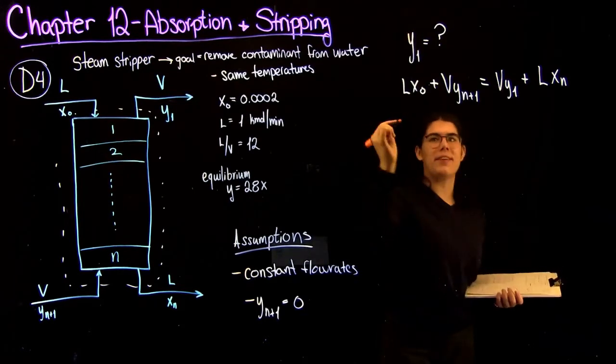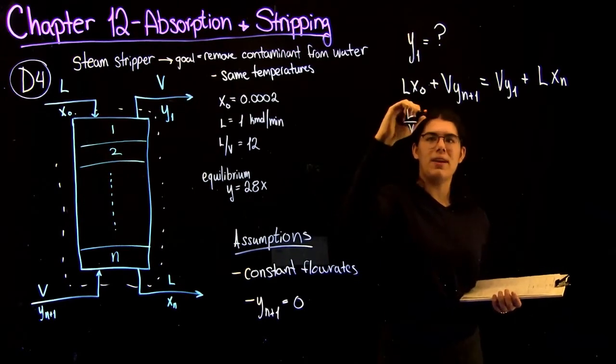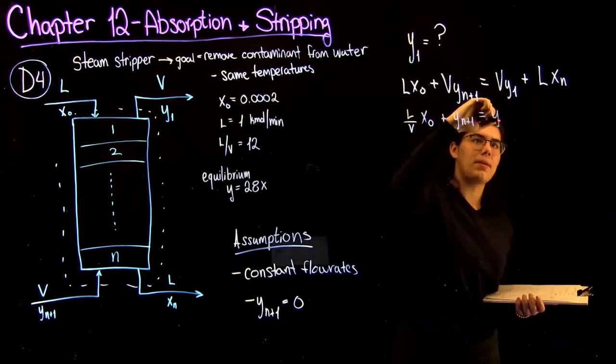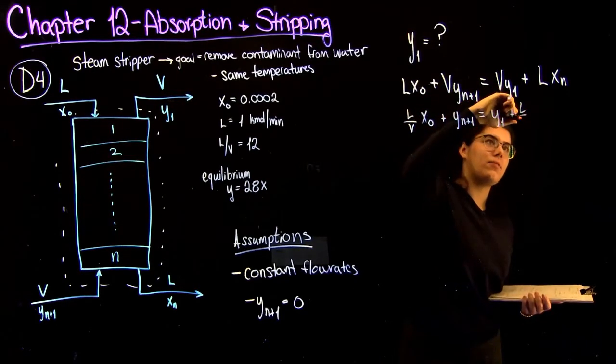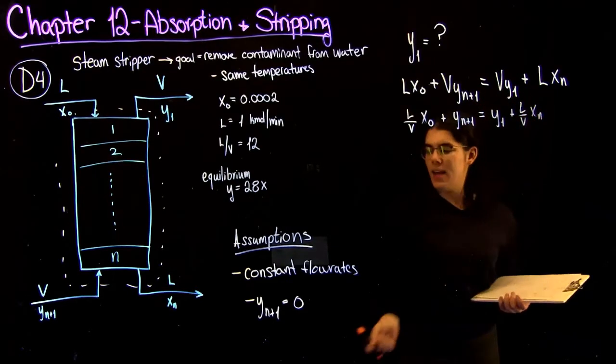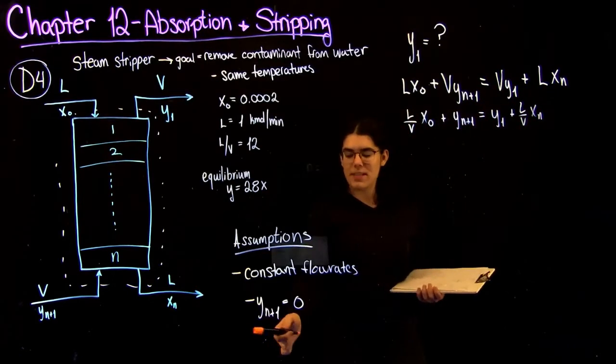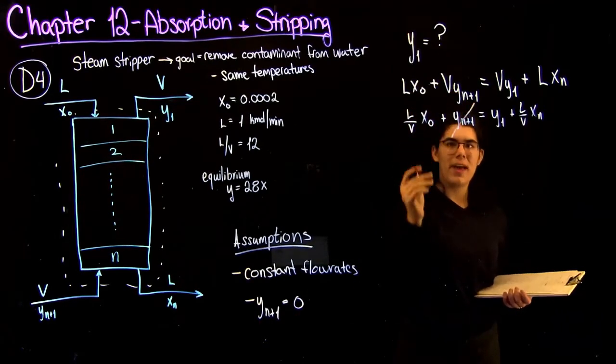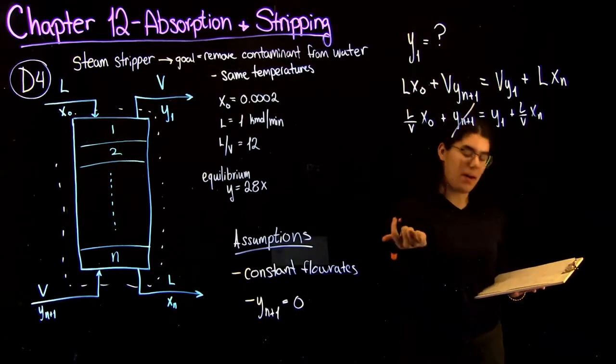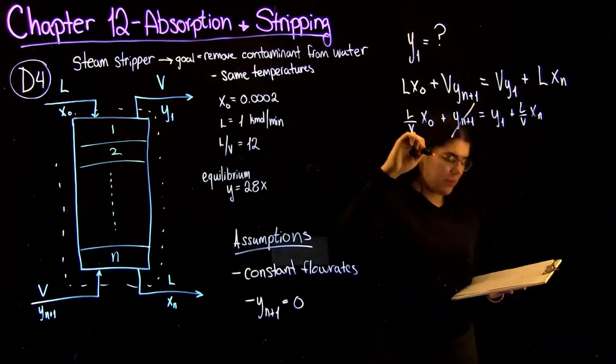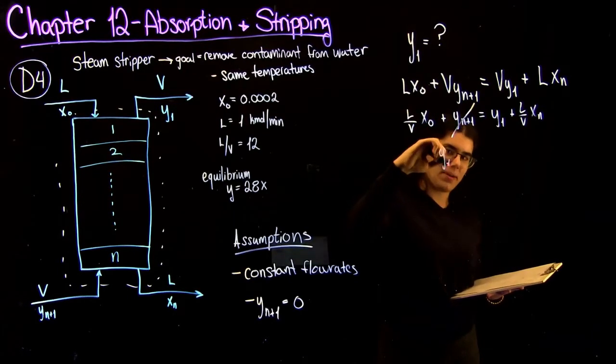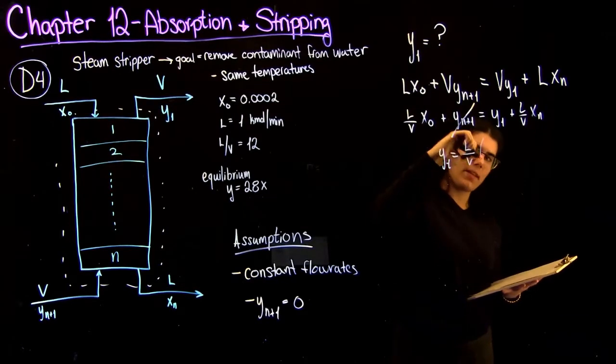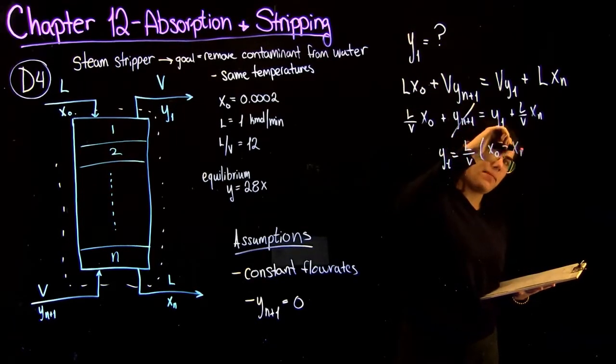So if we divide everything by V, we get L over Vx0 plus Yn plus 1 equals Y1 plus L over Vxn. Since one of our assumptions is that Yn plus 1 equals 0, we can just cross that off. And we can just rearrange this to get it into a useful form for us.